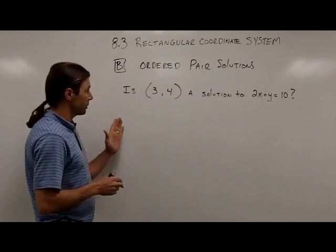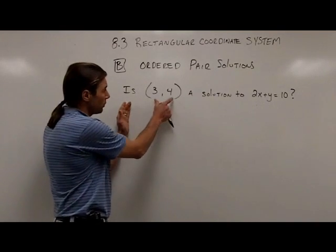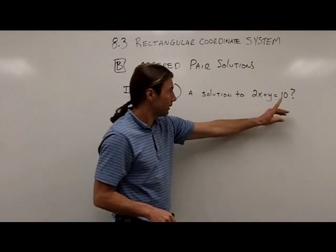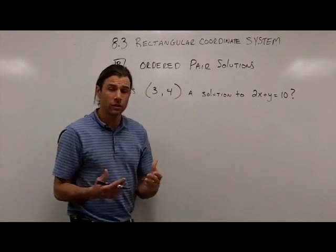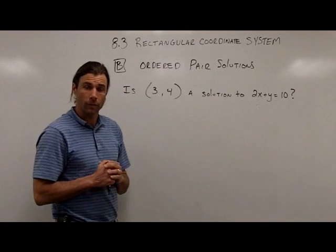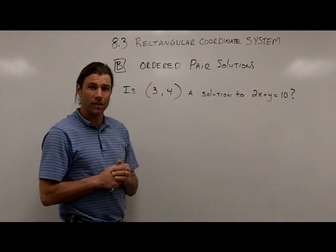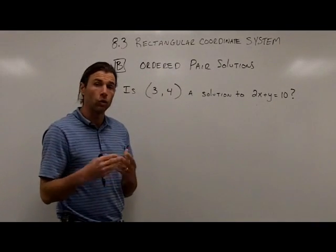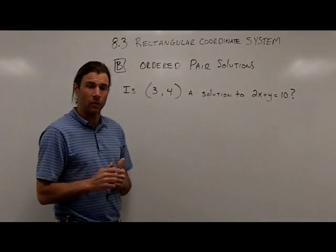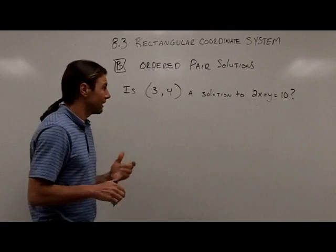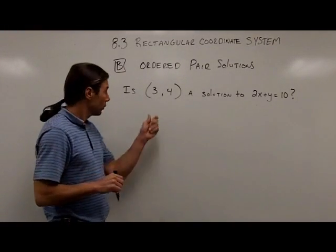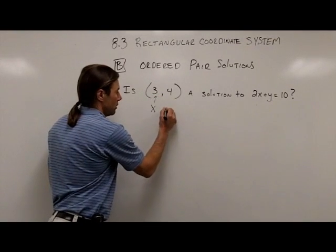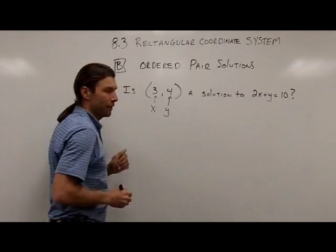So you can see here we're going to have questions like this. Is the ordered pair 3, 4 a solution to this equation 2x plus y equals 10? Now this is a little different than the equations that we've solved up to this point because all of our equations have a single type of variable. Maybe an equation would have x's in it or only y's, but not both an x and a y. So this is a little different. The reason we're doing this is because we're working in two dimensions. With our ordered pair, we have both an x value and a y value.